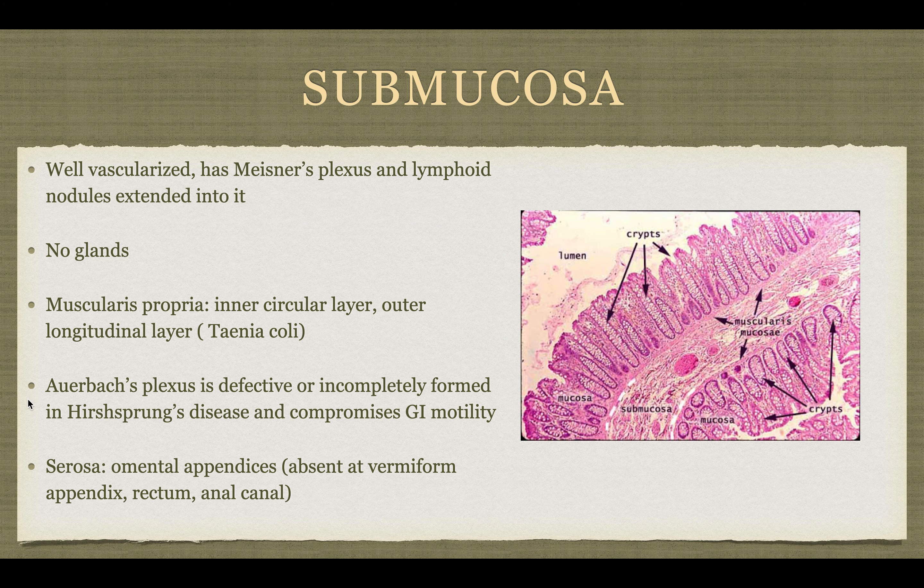The submucosa is well vascularized. It has the Meissner's plexus and the lymphoid nodules in it, and there are no glands.